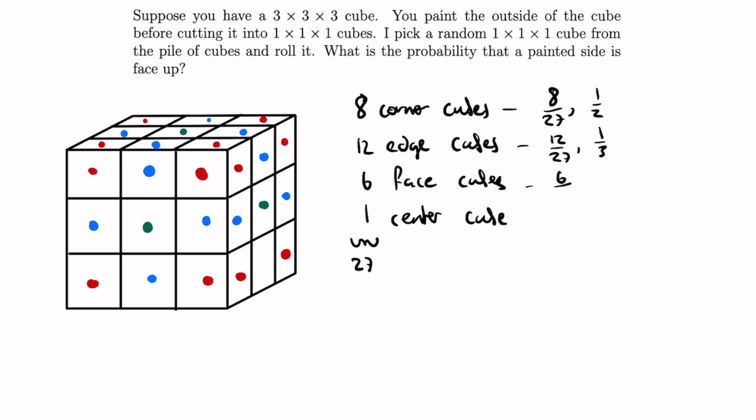If we pick a cube from the center of the face of the original cube, we roll a painted side with a probability of 1 over 6, and the probability of picking up such a cube is 6 over 27.